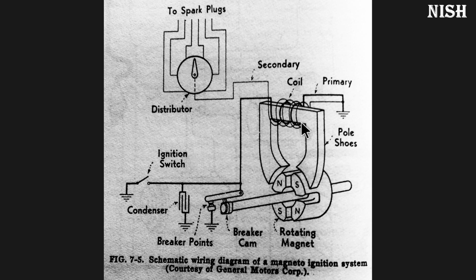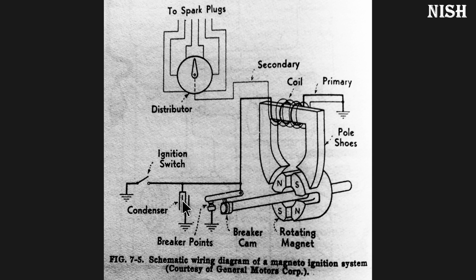So the ignition coil is used as a step-up transformer — it steps up the voltage and current. The current induced in the primary coil is stepped up significantly in the secondary coil, which produces around 16,000 volts. The primary coil operates at approximately 250 to 350 volts.